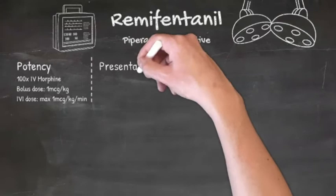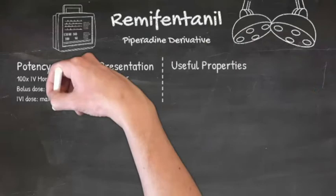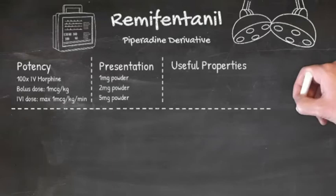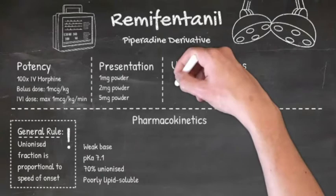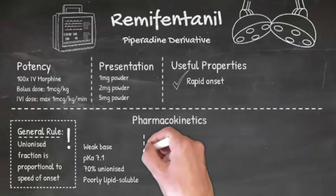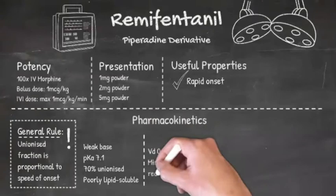Remi is presented as one milligram, two milligram, and five milligram bottles, the powder of which is diluted in saline, often into concentrations of around 50 micrograms per ml. The general rule with opioids is that their unionized fraction determines the speed of onset. Remi's pKa is 7.1, meaning that at physiological pH 70% of it is unionized, so it works very fast with a peak onset within one to three minutes.